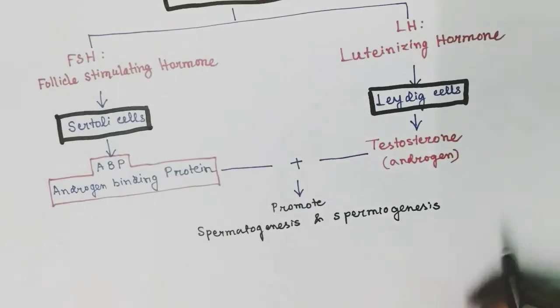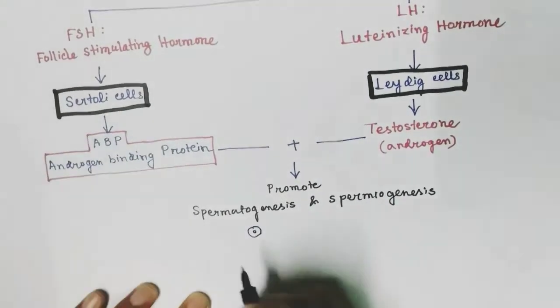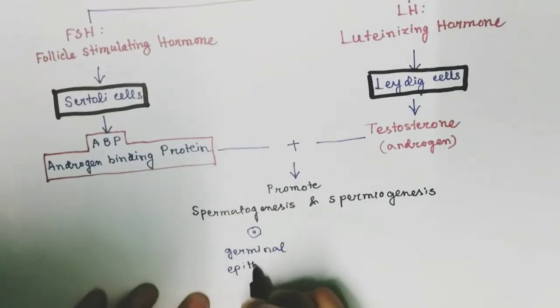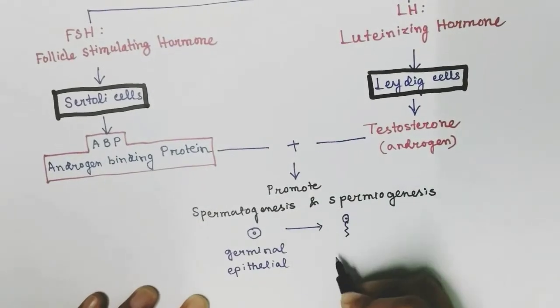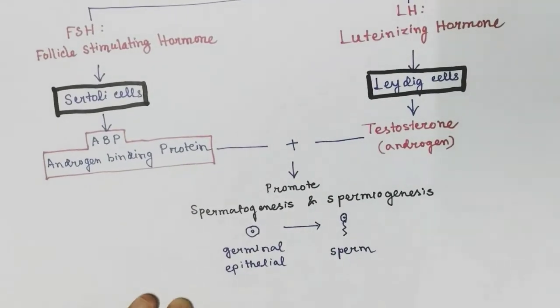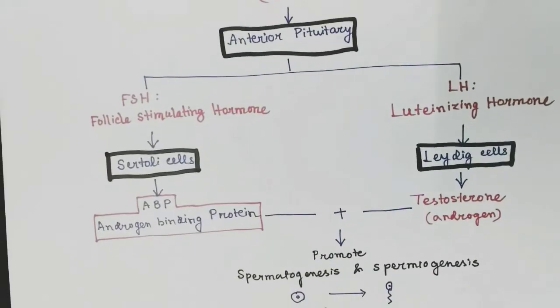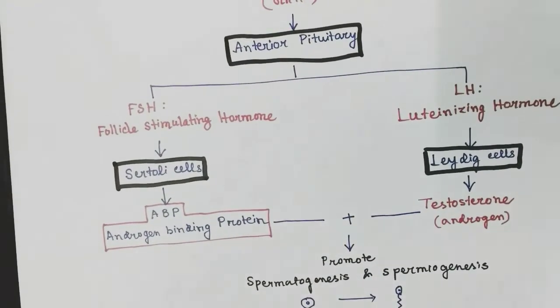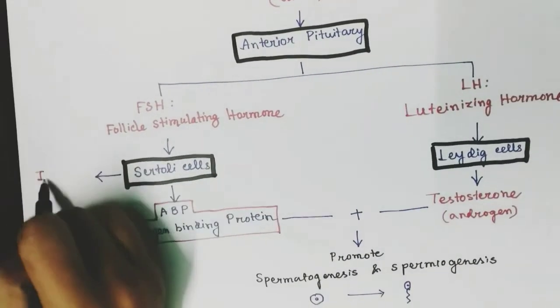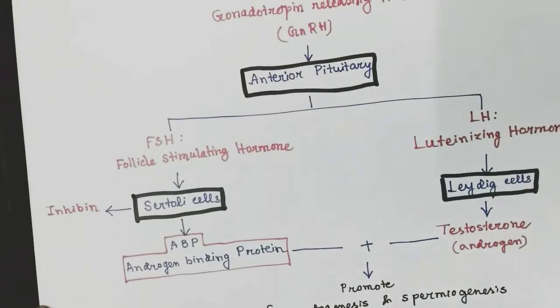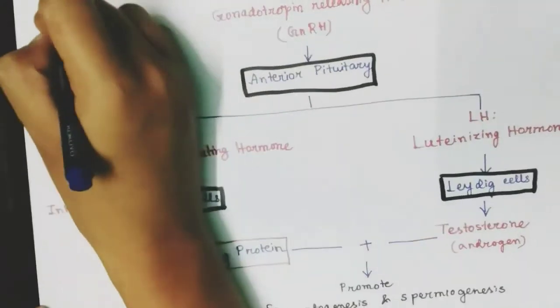From the germinal epithelial cell to the formation of sperm, the whole process is promoted by these two, ABP and testosterone. From the sertoli cells, inhibin hormone is also released which has a negative feedback on FSH release.